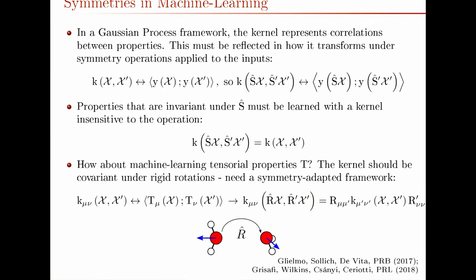Now I move on to what I myself am working on, which is to take into account the symmetry of the problem. In Gaussian process regression, your kernel between two environments is a measure of the correlations between whatever property you want to predict. Because your property will transform in some way when you apply a symmetry operation, your kernel also has to transform in a prescribed way. For example, if you want to predict a scalar property like the energy, which is invariant to rotations or translations, your kernel also has to be invariant to rotations and translations.